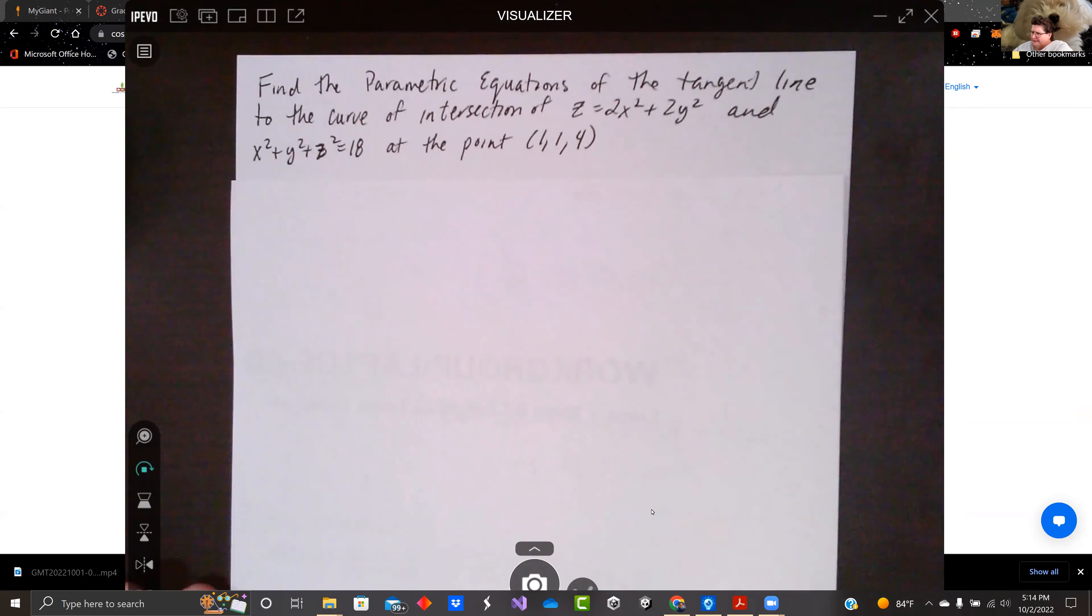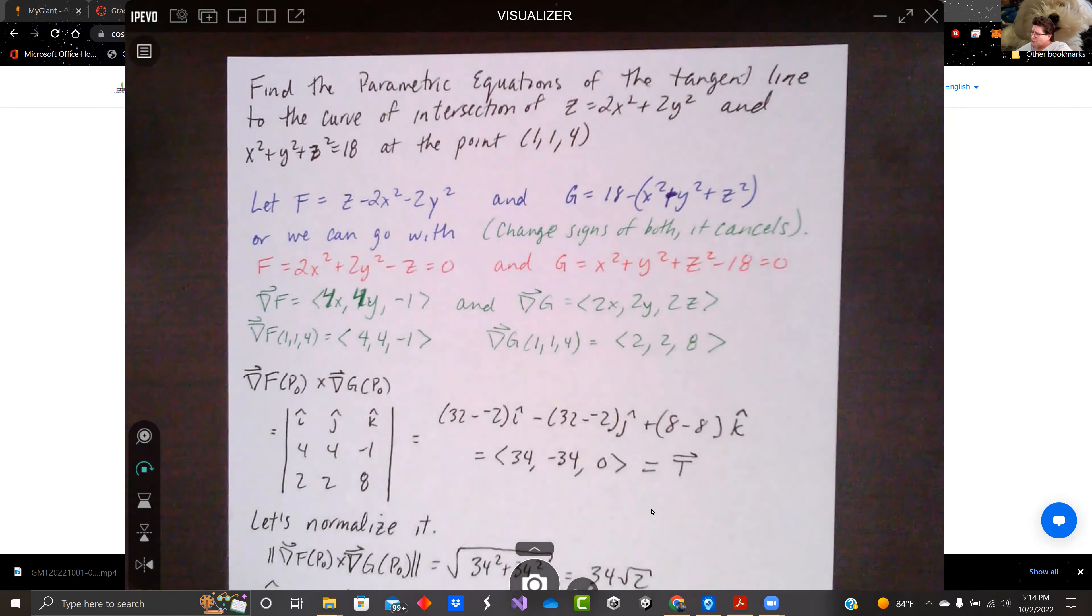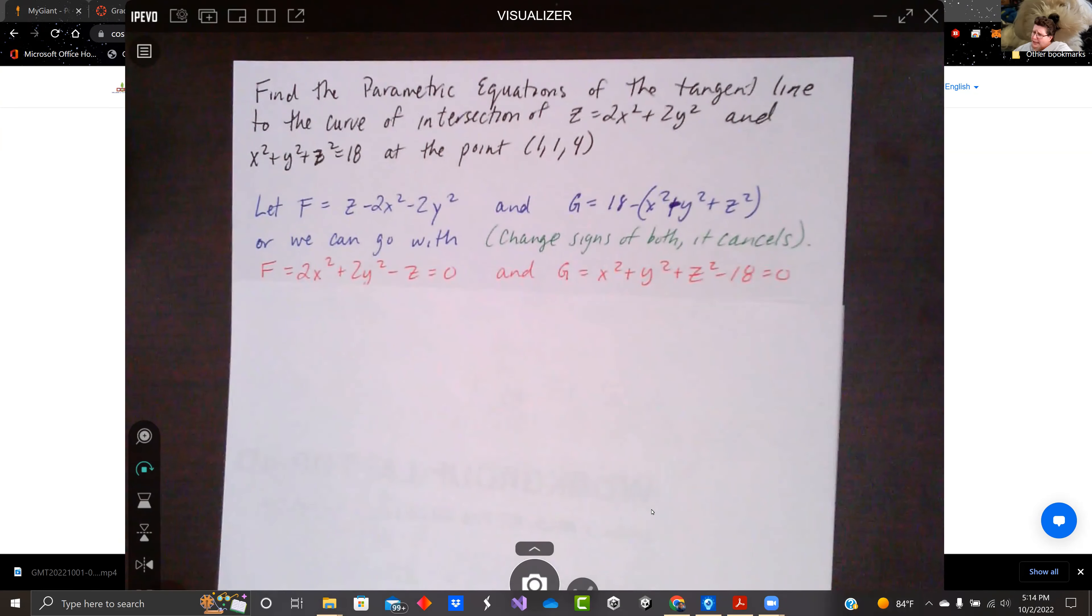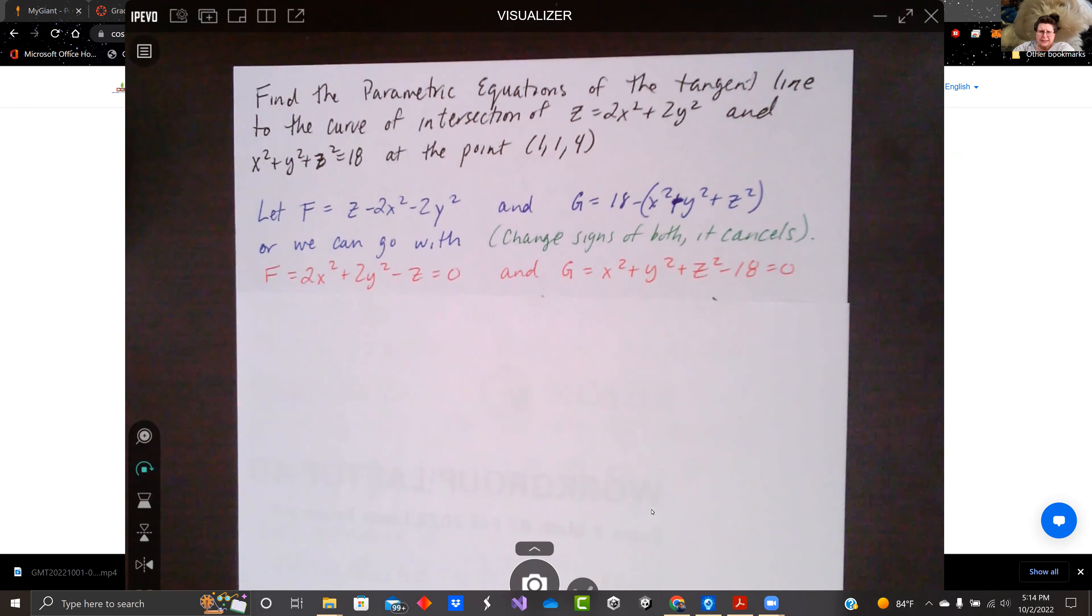So we need to make F and G. What we're going to do is move everything to one side. I could either go with F equals Z minus 2X squared minus 2Y squared, and G equals 18 minus X squared plus Y squared plus Z squared. That would be in the typical Z minus F of XY format, or in this case, W minus that kind of thing.